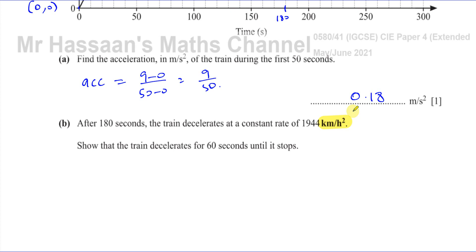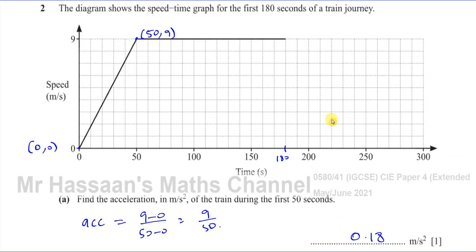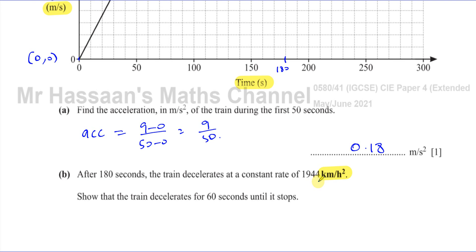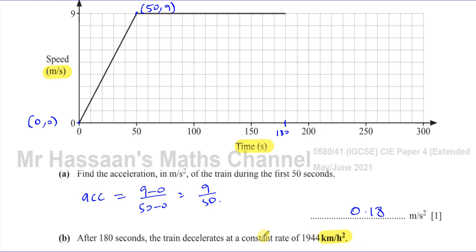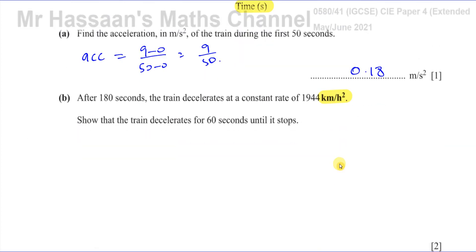They're bringing your attention to something. So you look at the units of the graph: the speed axis is in meters per second, and the time axis is in seconds. So the deceleration of 1,944 is not going to be the gradient directly on this graph, because this graph is in meters per second against seconds. If it were kilometers per hour against hours, then the gradient would be minus 1,944. What we have to do is change the units of acceleration from kilometers per hour squared into meters per second squared.